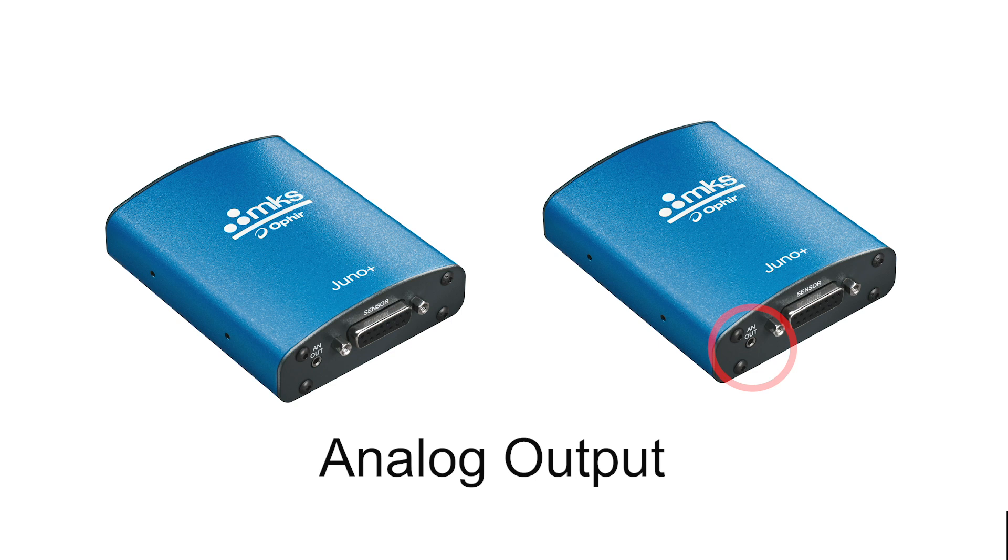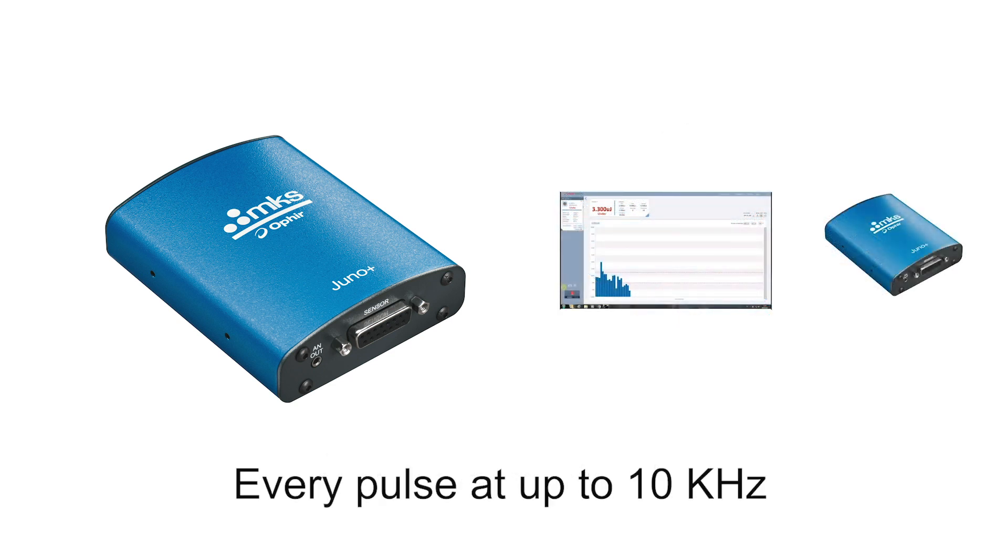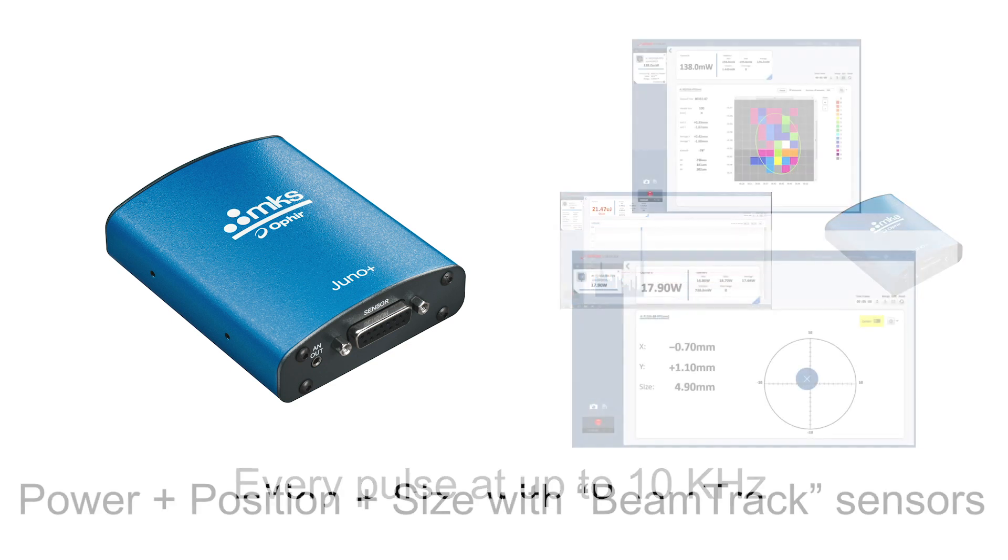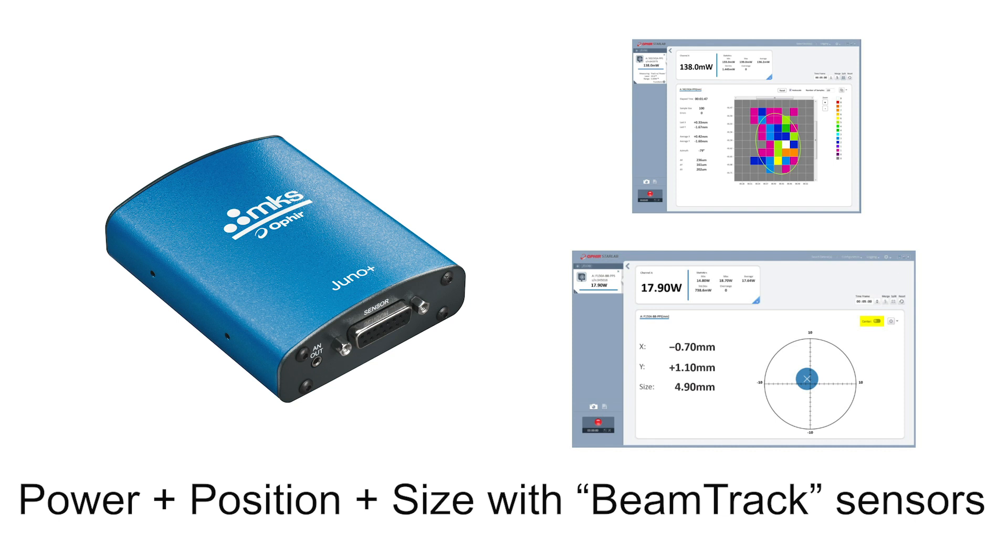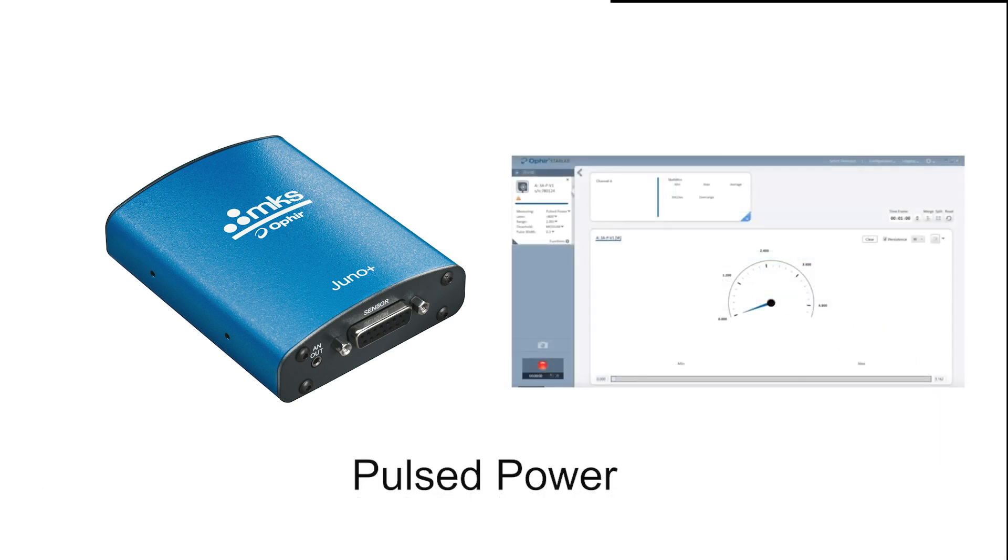It provides analog output as well. It lets you record pulse energies of every pulse at up to 10 kHz. It also supports position and size measurements with Ophir's beam track sensors. Pulsed power measurements for measuring high powers using short exposure with low power sensors.